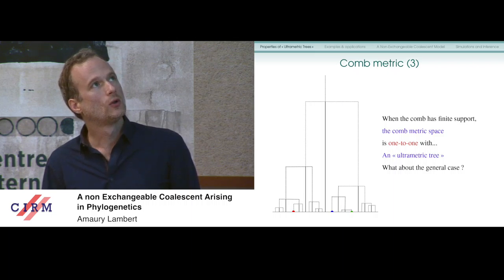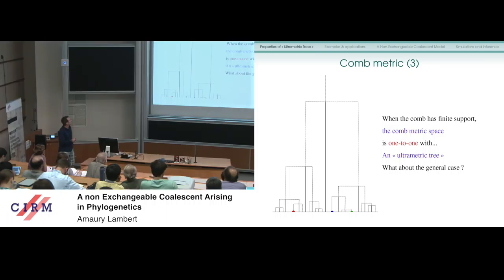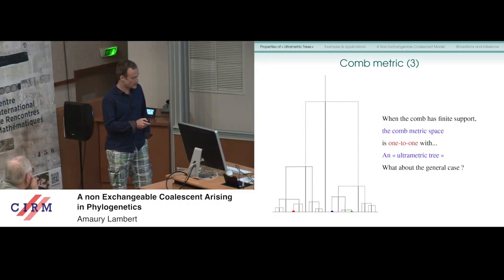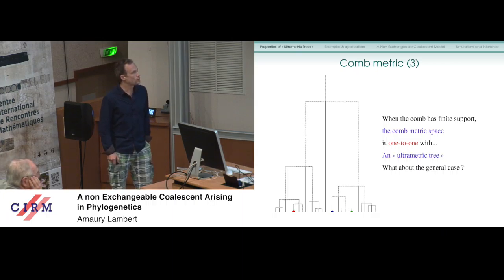You can see that the comb metric space is one-to-one with an ultrametric tree — I put quotes because it's not really the tree which is ultrametric. You take a dashed line, divide it into two, and when it encounters the next height of f or the next point of the graph, it divides into two, et cetera. The distance between the red and the blue in this tree is exactly this height; between the blue and the green is this height; between the red and the green is this height. So there is a one-to-one relationship between a comb metric space and an ultrametric tree.